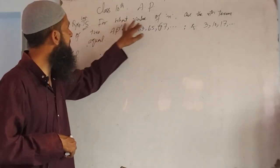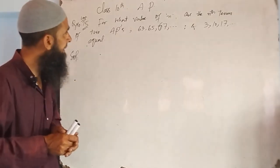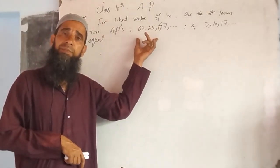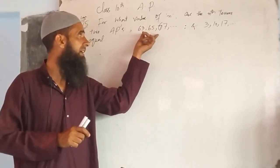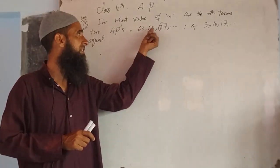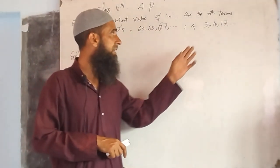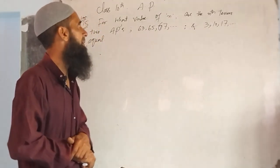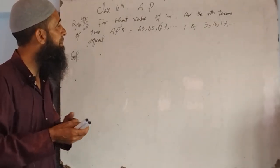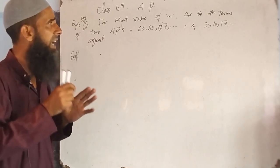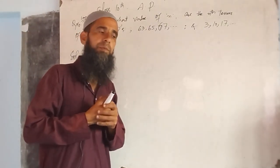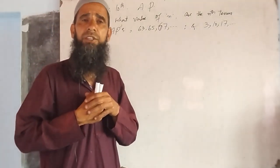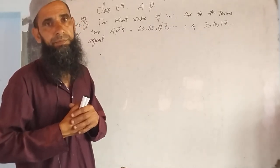Question number 15: What value of n? n ke kis value pe are the nth terms of two APs? We have here two APs given. First Arithmetic Progression terms are 63, 65, 67 and so on. And second Arithmetic Progression is 3, 10, 17 and so on. In these two arithmetic progressions, n ka value kya hoga jab un do arithmetics ki nth term equal hogi?